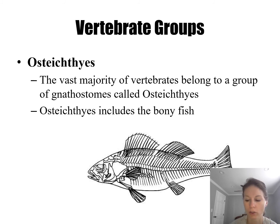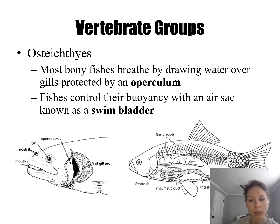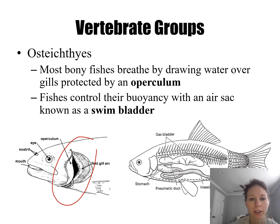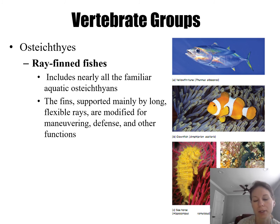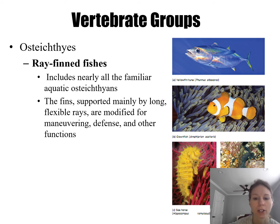Osteichthyans are bony fish and include most fish. They have an operculum that covers their gills and a swim bladder that helps them control their buoyancy. The more familiar group are the ray-fin fishes — they have long, flexible rays in their fins that help them maneuver, evade predators, or catch prey.